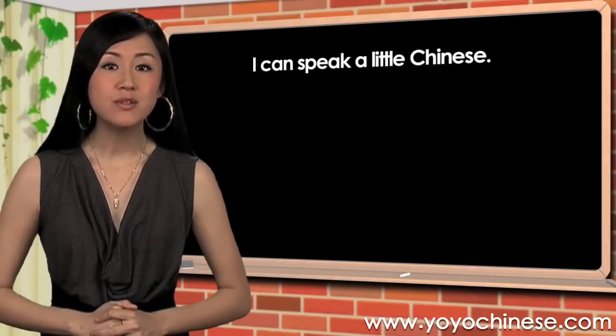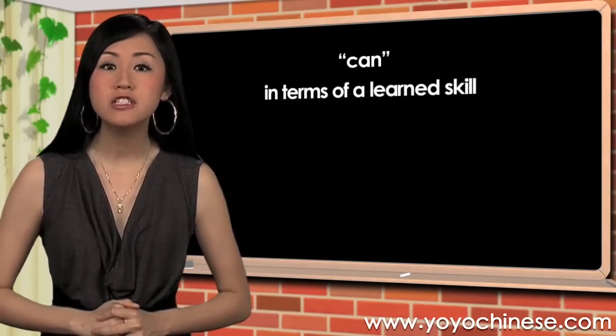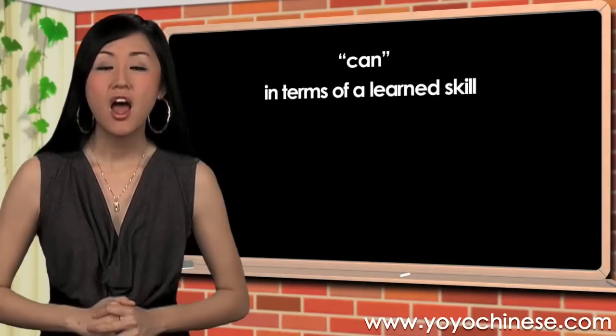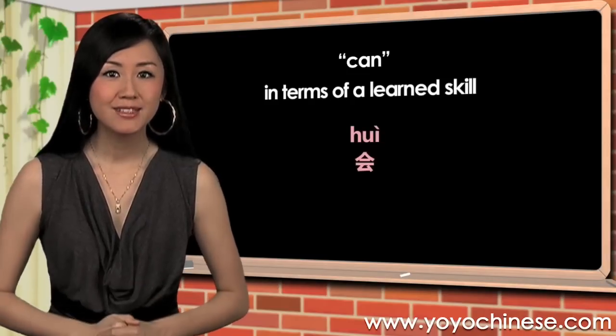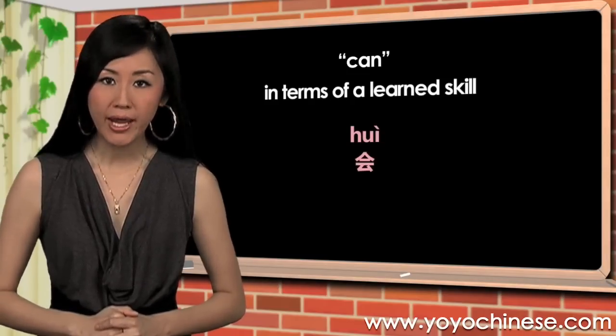First, this is how you say 'can' in terms of a learned skill: 会 (hui), hui.